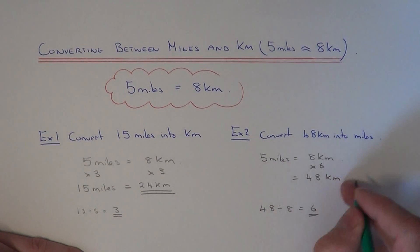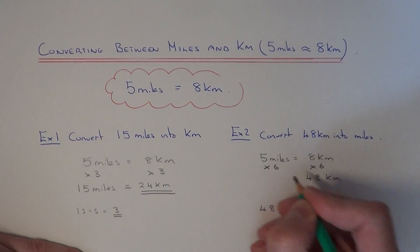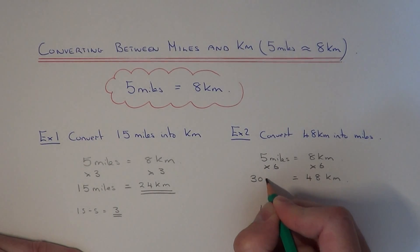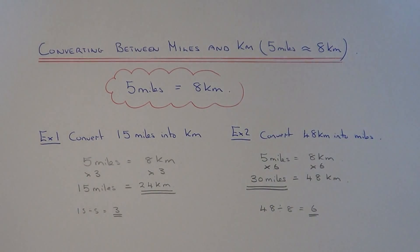If we've multiplied the kilometers side by 6, we now need to multiply the miles side by 6. So 5 times 6 is 30 miles. That's our final answer. Thanks for watching.